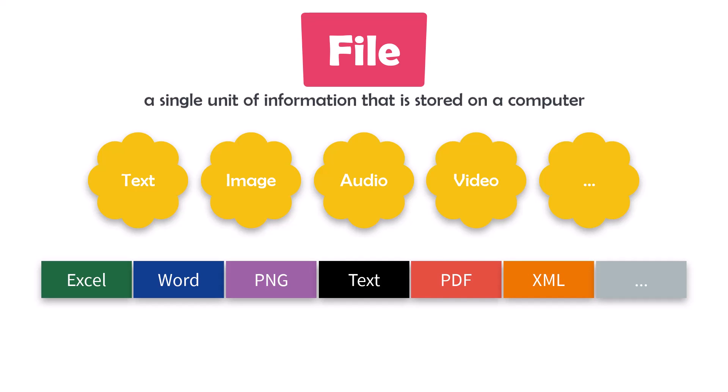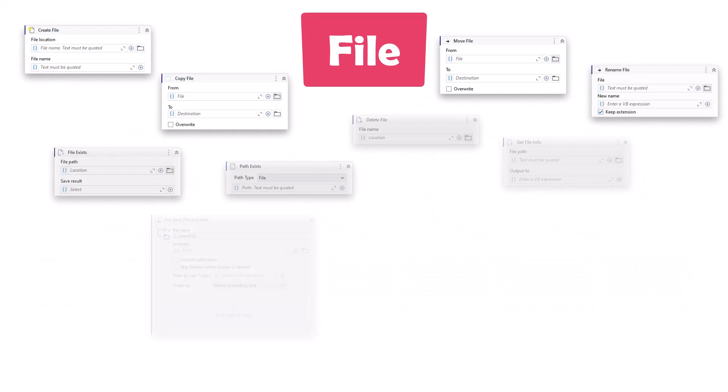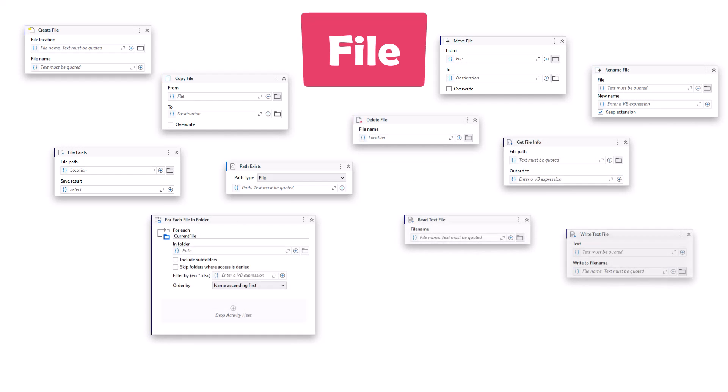In UiPath we have many different activities to work with files. For example, activities which we can use to create, copy, rename, move, or delete a file. There is also an activity to loop files inside a folder. I will talk about these activities in a moment.